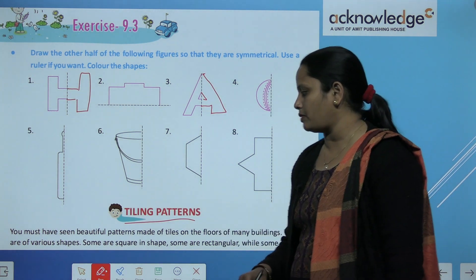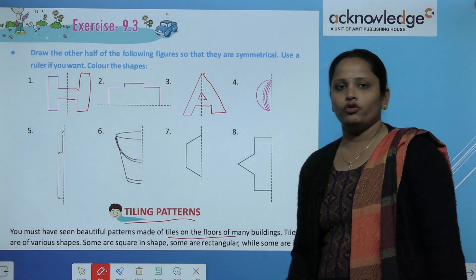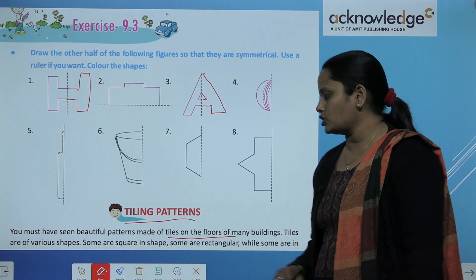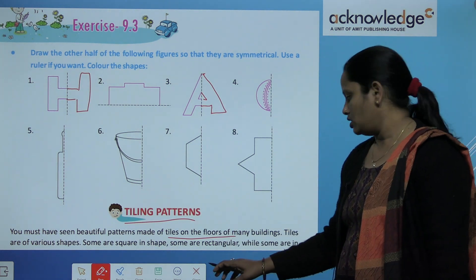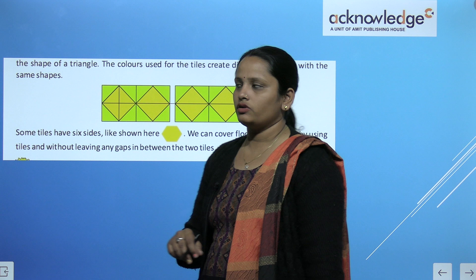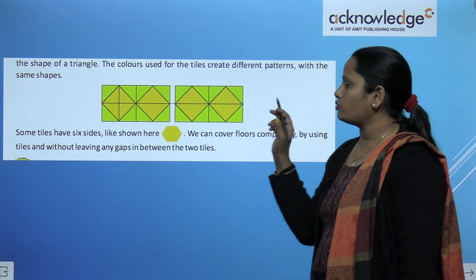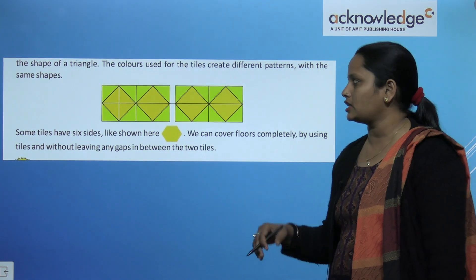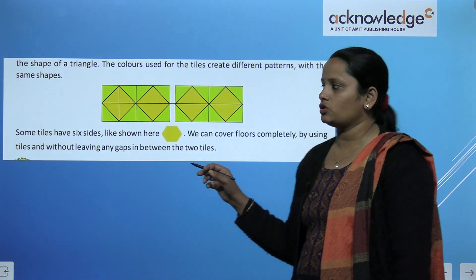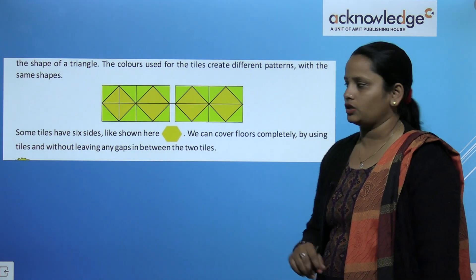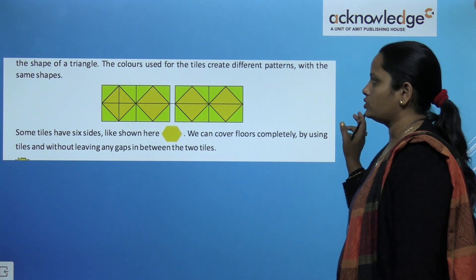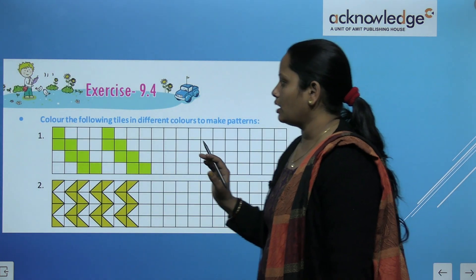Next is Tiling pattern. Tiling pattern kya? You may have seen beautiful patterns made of tiles on the floor. Floor pe aap ne tiles dekhe, usmein bohut sare patterns bane hote hain. There are various shapes. Some are square in shape and some are rectangular, while some are in the shape of a triangle. So these are the patterns of floor patterns. Now the color use for the tiles create different patterns. We can cover floors completely by using tiles without leaving any gap in between the two tiles.